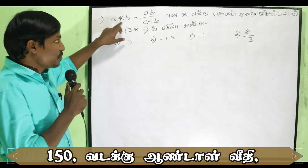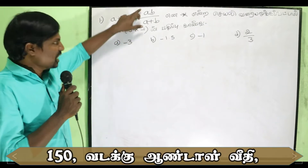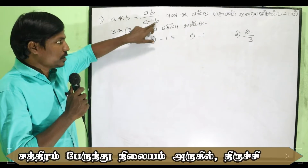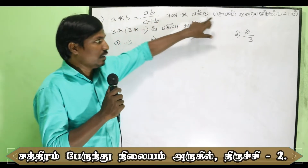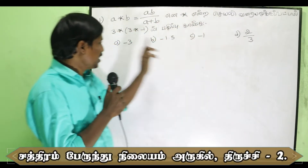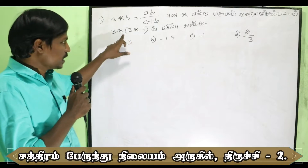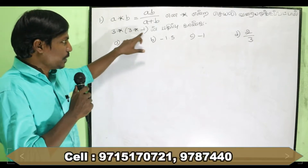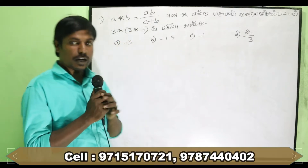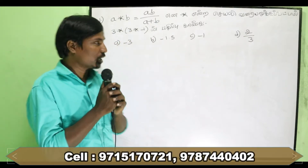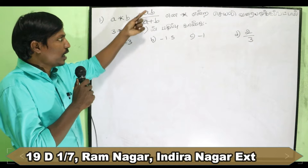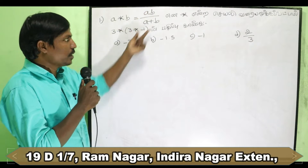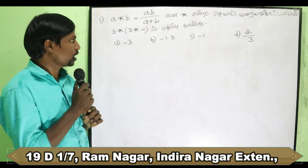We have a star operation defined as: a star b equals a times b divided by a plus b. That is, a ★ b = ab / (a + b). Now we need to evaluate 3 ★ (3 ★ -1). First, let's apply the formula: a star b equals a times b divided by a plus b.